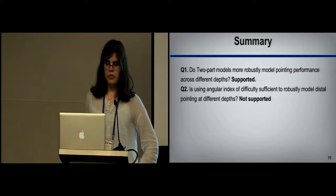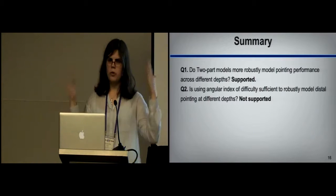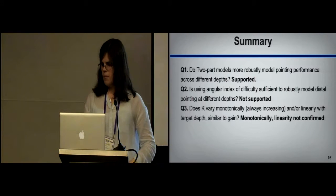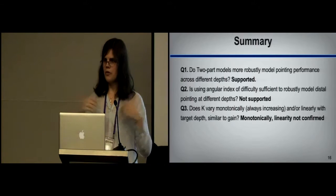Is using angular index of difficulty sufficient to keep using our one-part models? We didn't see so. Maybe somebody else will find something different that counters our argument. Who knows?